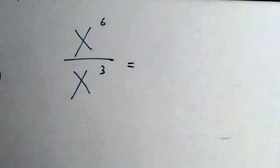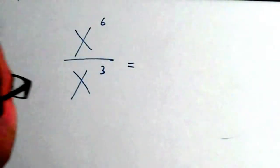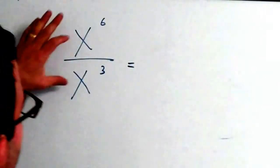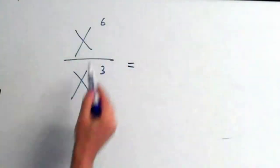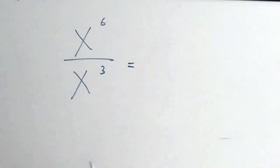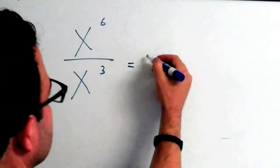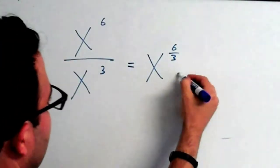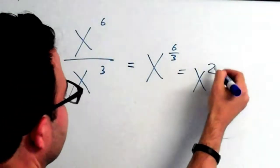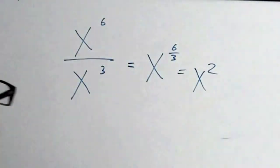Sometimes students make this mistake. If you have division with exponents, so you have the same base for numerator and denominator, but it's x to the 6th divided by x cubed, sometimes students will say, well, I'm just going to divide those exponents. What they say wrong is x to the 6th divided by 3, which is x squared. But that is completely wrong. Do not do that.